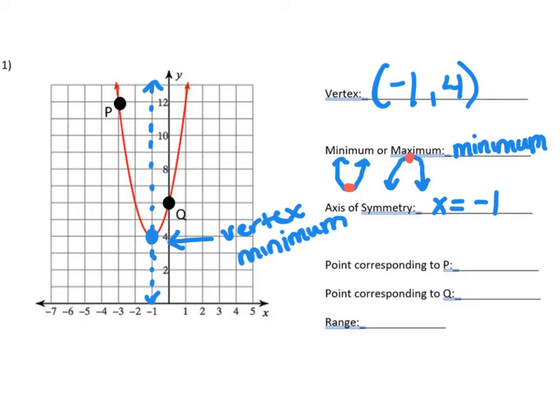Now, the point corresponding to P is the point on the other side of the axis of symmetry that matches up. So if I have P, I can go over two spaces to the axis of symmetry, go two more spaces to the other side, and I find this corresponding point, and my ordered pair for the corresponding point to P would be (1, 12).